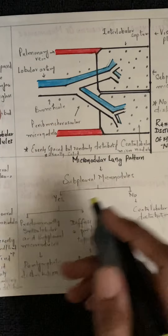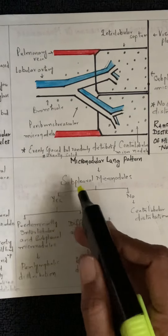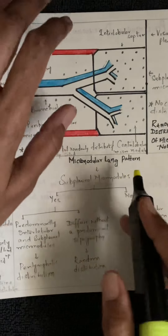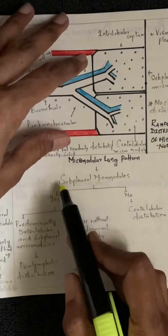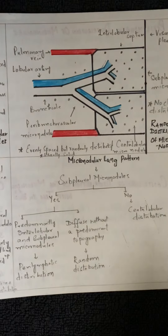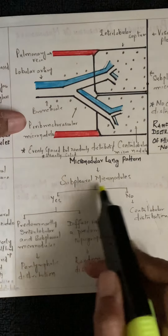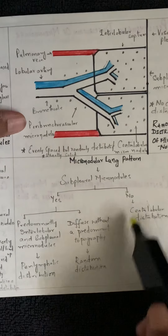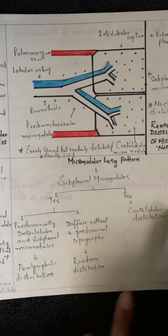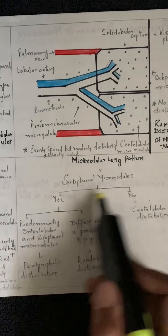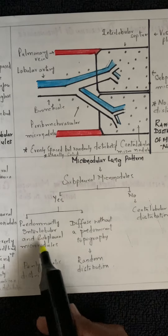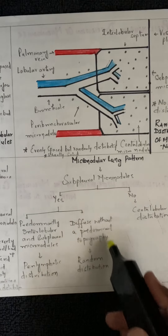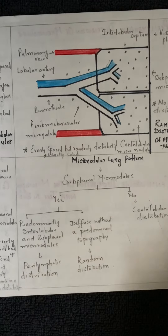For practical diagnosis on CT: first check if subpleural micronodules are present. If there are no subpleural micronodules, it is centrilobular distribution. If there are predominantly subpleural and interlobular micronodules, it is perilymphatic distribution. If diffuse without any predominant topography, then it is random distribution.